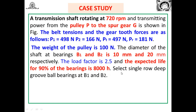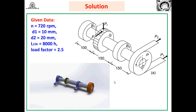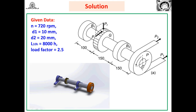In Step 1, we must calculate the radial and axial forces acting on the bearings for the expected life of 8000 hours. The given data is: n = 720 rpm, d1 = 10 mm, d2 = 20 mm, L10h = 8000 hours (to be converted to million revolutions), and load factor = 2.5.